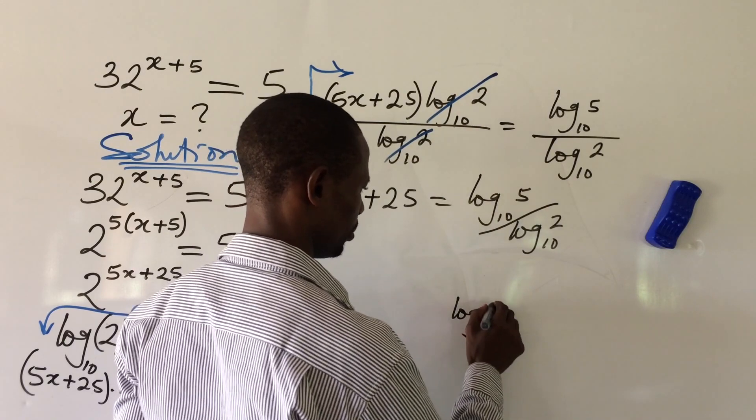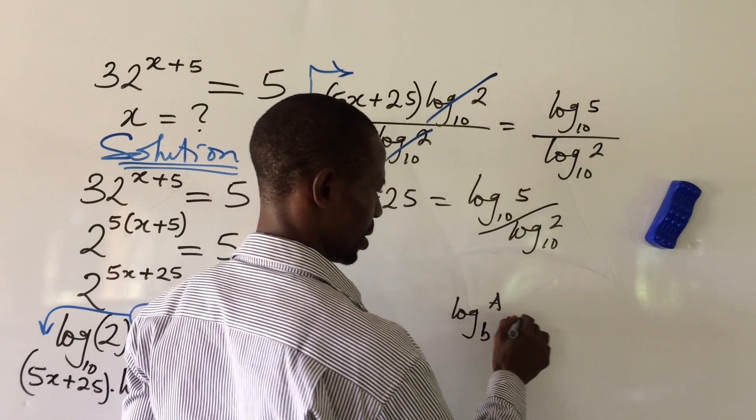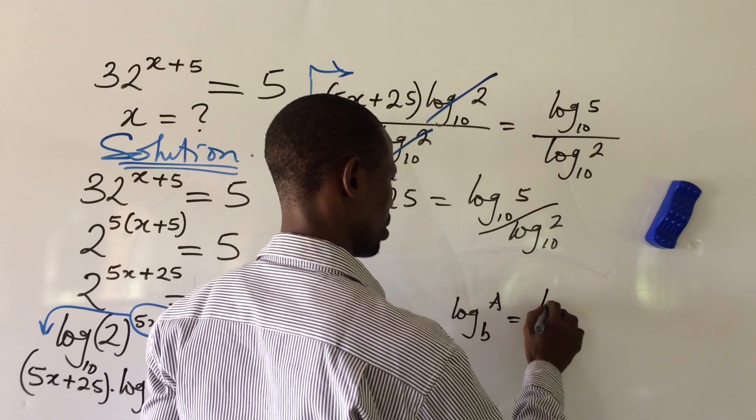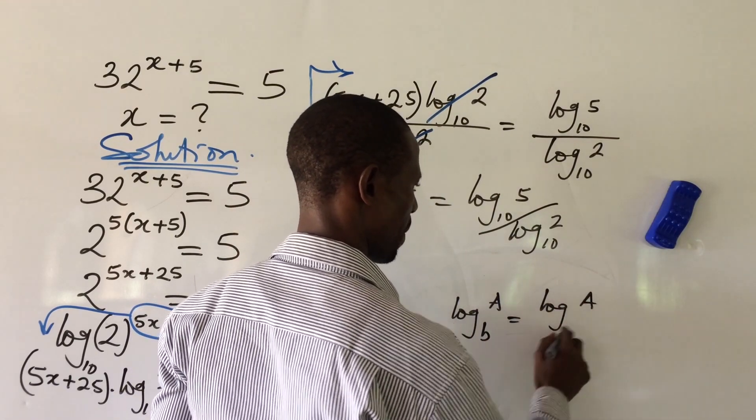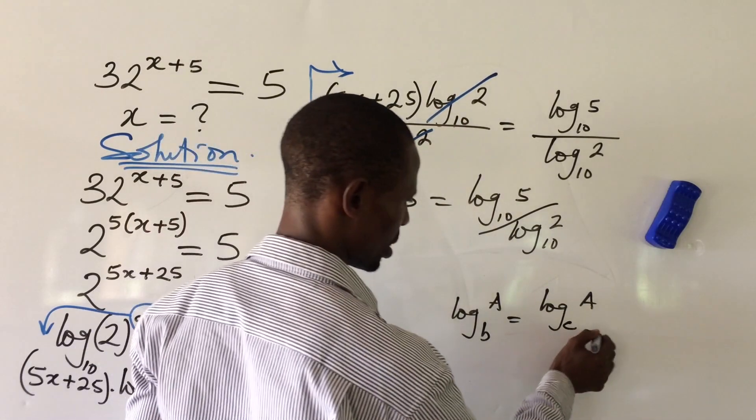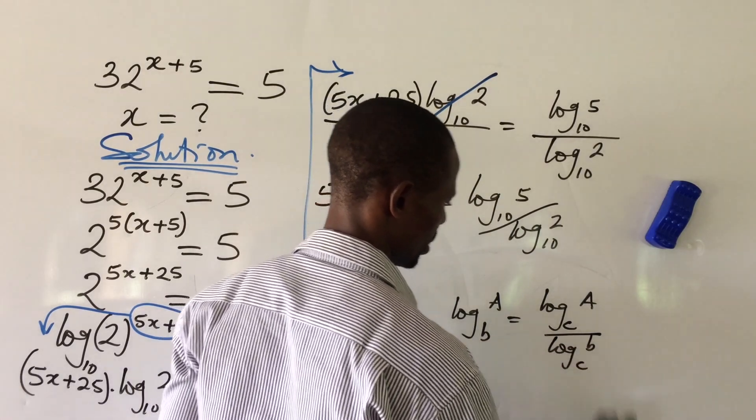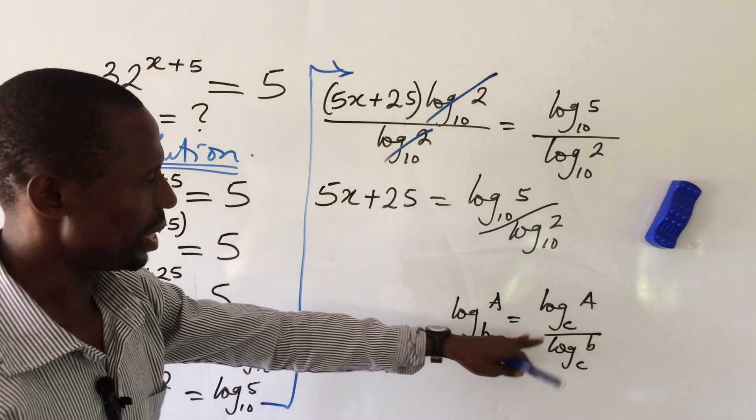This will now become your log your A base, let's take it to base C, change it into base C, all over log B base C. If you look at this, we are having something of this nature here now.